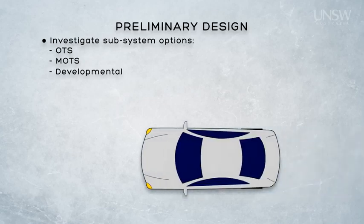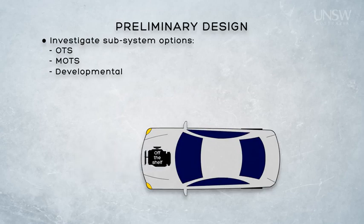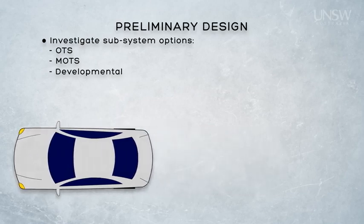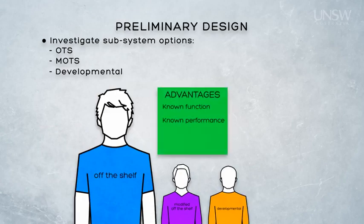Let's start by looking at the off the shelf option. Using our car example from earlier, if the engine was a subsystem within our car design and we knew exactly what that engine needed to be able to do from a function, performance, and interface perspective, chances are there would be some commercially available engines that would fit the bill. Commercially available subsystems offer us a number of advantages. They are likely to be known in terms of their function and performance — that is, there is likely to be some objective evidence that the subsystem does in fact perform in accordance with the claimed performance. Off the shelf items are likely to be immediately available or available with some known lead time, making planning much easier.